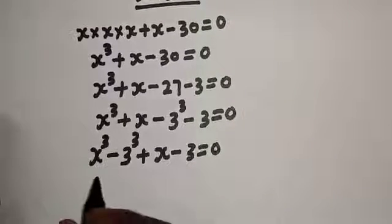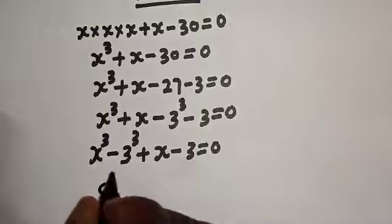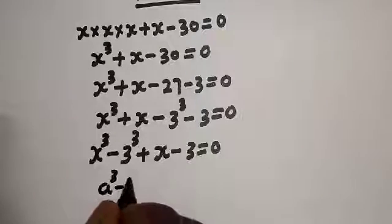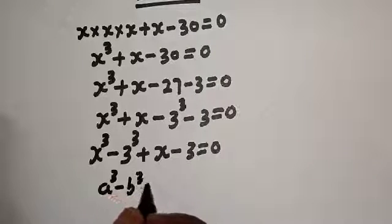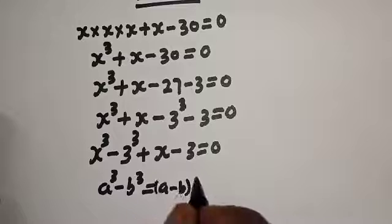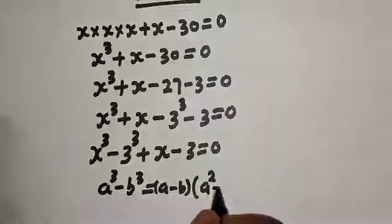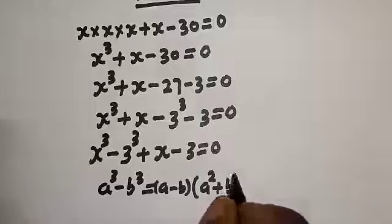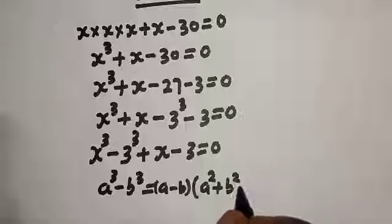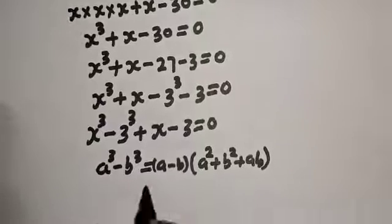Take note of this exponential rule: if you have a raised to power 3 minus b raised to power 3, this is equal to a minus b, bracket a squared plus b squared plus ab, where a is equal to s and b is equal to 3.